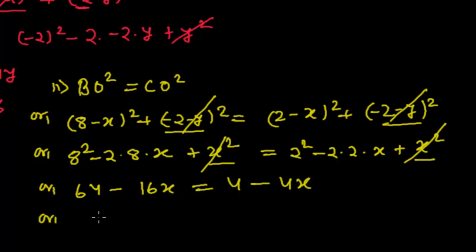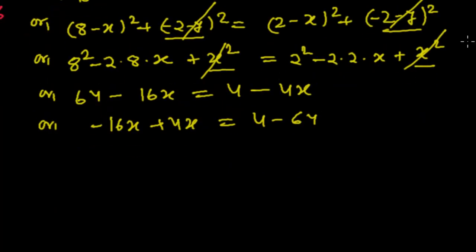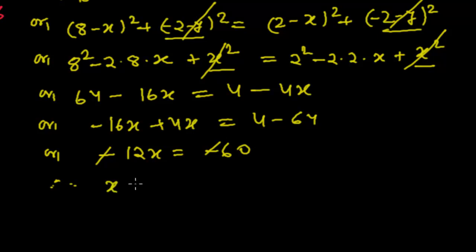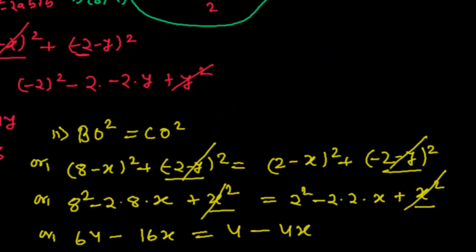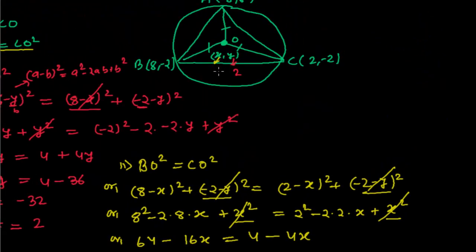Rearranging: 64 - 16x = 4 - 4x, so -16x + 4x = 4 - 64, giving -12x = -60. Therefore x = 60 ÷ 12 = 5. So the value of x is 5, and the circumcenter coordinates are (5, 2).